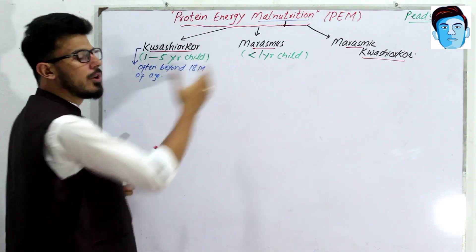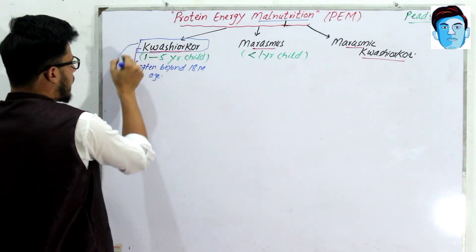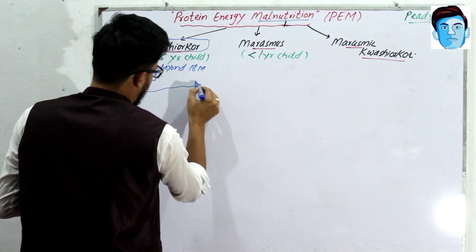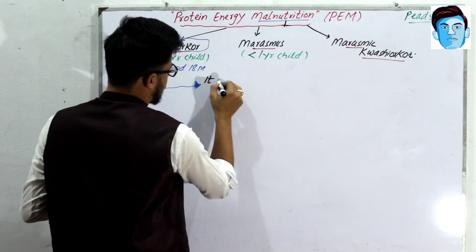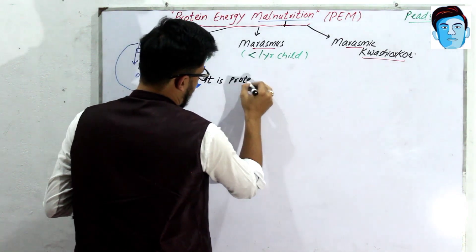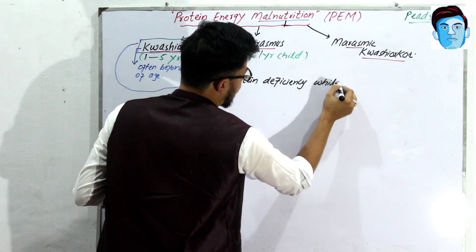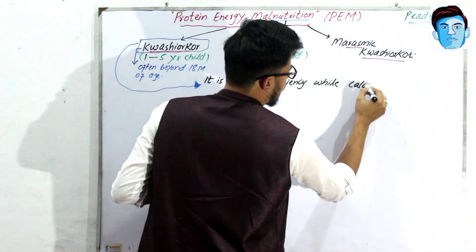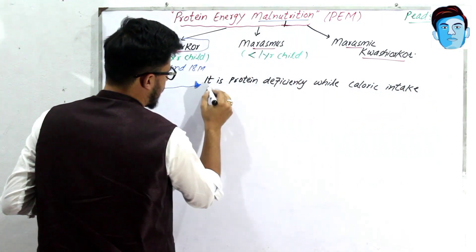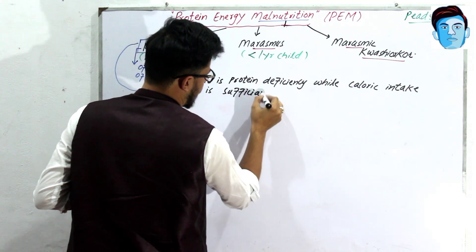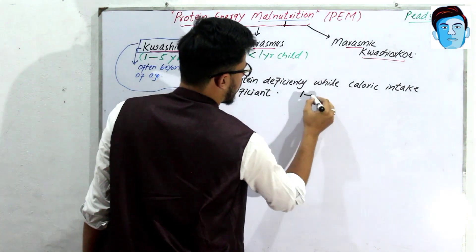Kwashiorkor is protein deficiency — it is protein malnutrition — while caloric intake is sufficient. The age for kwashiorkor is mostly one to five years.